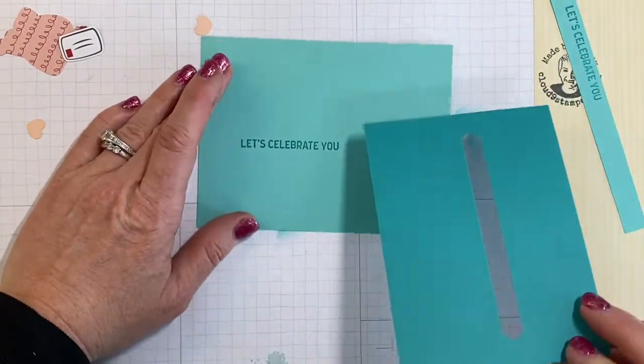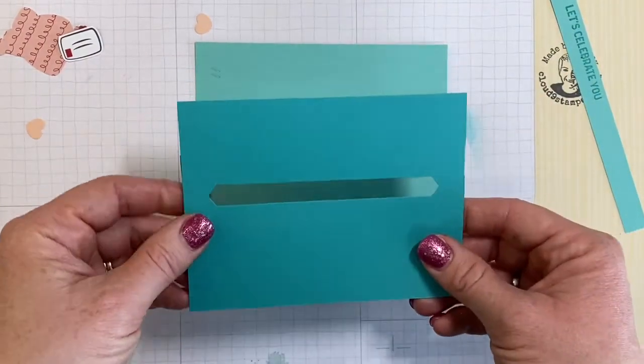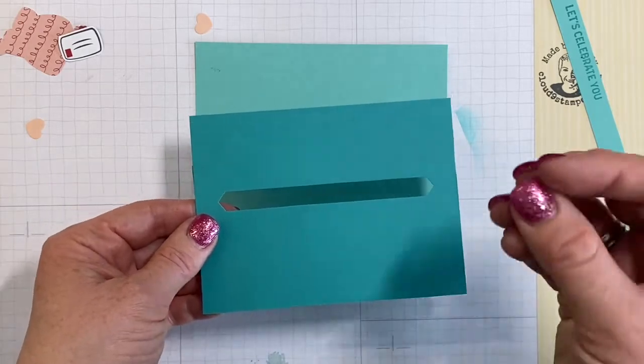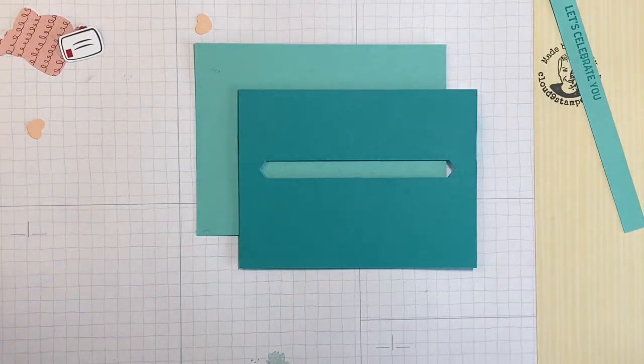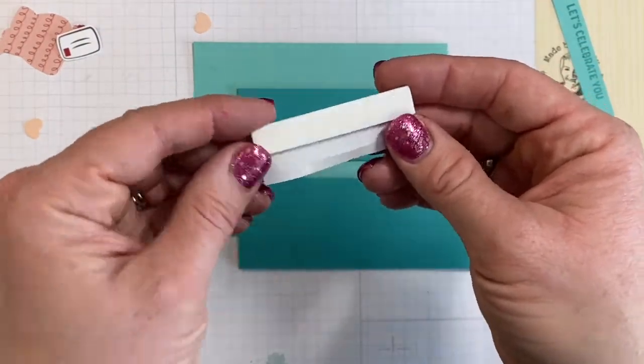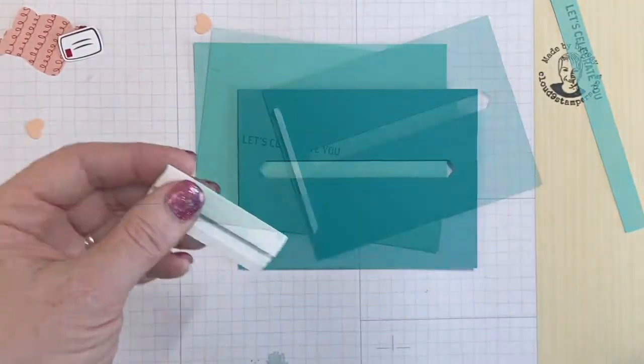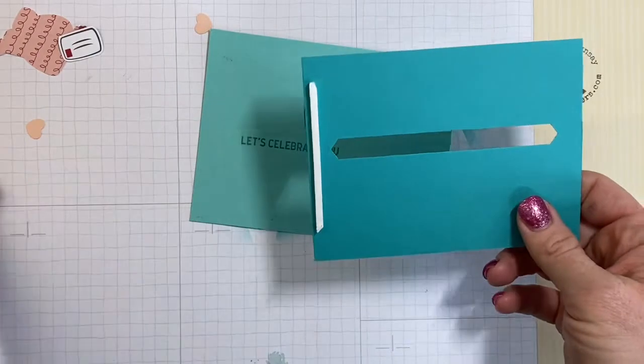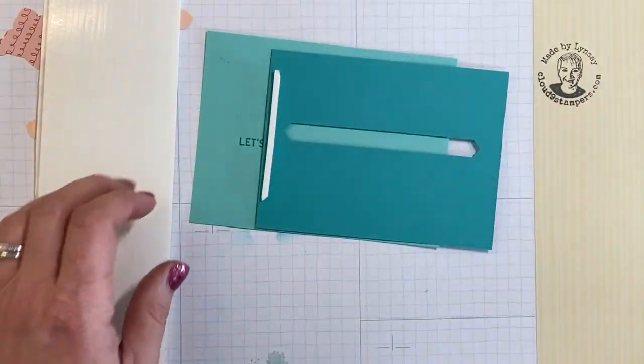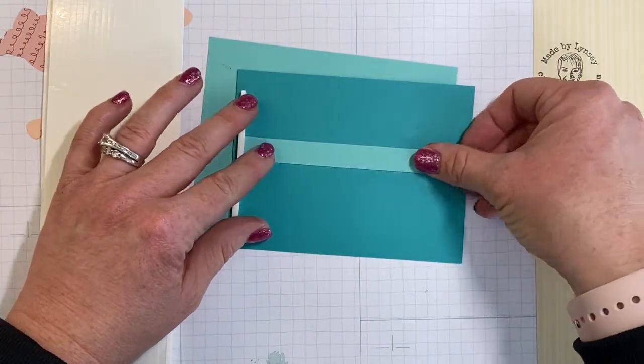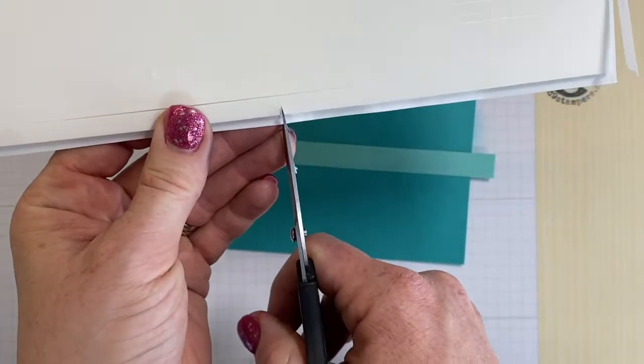The next step is we are going to add some adhesive to the back of this. You're going to want to use some sort of foam dimensional, so you can either be Stampin' Dimensionals or you can use pieces of the foam adhesive strips, or you could also use the foam adhesive sheets and just cut it to size. I'm going to use foam adhesive strips, so I'm just going to put one on the end as a bumper for your pull tab, and then just kind of layer it here to make sure that you're not interfering with it. I'm going to cut one of my strips in half.